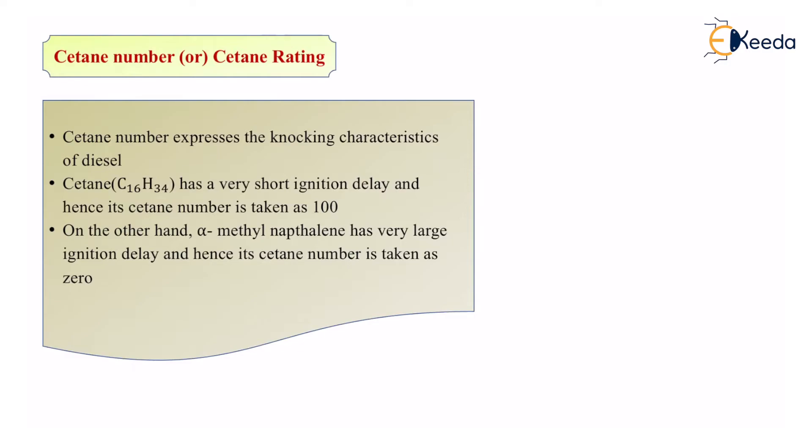So there are two different hydrocarbons given to us. The first hydrocarbon is cetane which contains 16 carbons and 34 hydrogens. That means 16 carbons straight chain and the hydrogens attached to it.